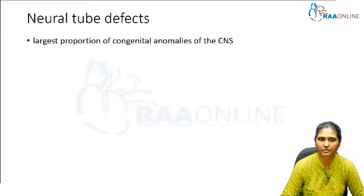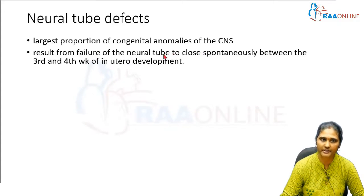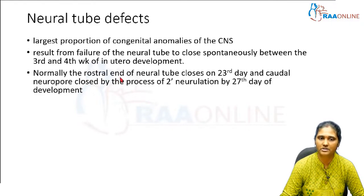Neural tube defects represent the largest proportion of congenital anomalies of the CNS. They occur because of the failure of closure of the neural tube, which should close spontaneously between the third and fourth week of in utero development. Normally, the rostral end closes by day 23 and the caudal neuropore closes by the process of secondary neurulation by day 27.